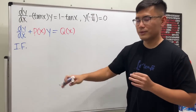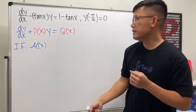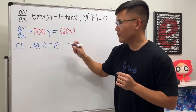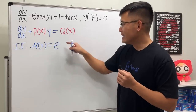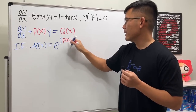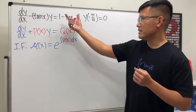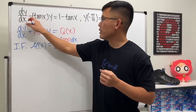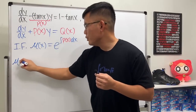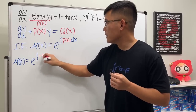The integrating factor — usually we use mu as notation — so mu of x is equal to e raised to the integral of p(x) dx. In our situation, p(x) is negative tangent x, so when we compute mu(x) we need to evaluate the integral of negative tangent x dx.